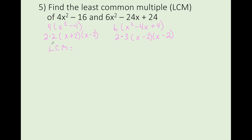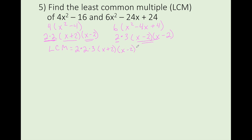Here's how we find the LCM. We take each factor that occurs and the most amount of times it occurs in any one term. Over in this term, I have these two 2's — happens two times here, only happens once here, so the most amount of times it occurs is here. I have a single 3 here, once here, none over there, so I need a 3. I have an x plus 2 that happens one time, doesn't happen at all over here, so I need it. x minus 2 happens once here, but twice over here, so I need them both — happens two times over here. Now we're going to clean it up: 2 times 2 times 3 is going to be 12, times (x plus 2) times (x minus 2) squared. No reason to multiply it all out.